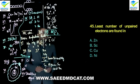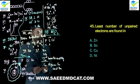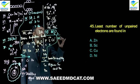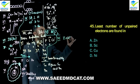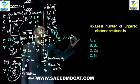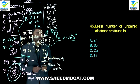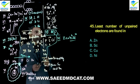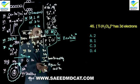Question 45: Least number of unpaired electrons are found in which transition element? Zinc's electronic configuration is [Ar] 4s2 3d10 — fully filled, so there are zero unpaired electrons. Beta option has 1 unpaired electron, charlie option has 1, delta has 2. So zinc (alpha option) has the least — zero — unpaired electrons.